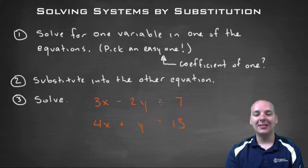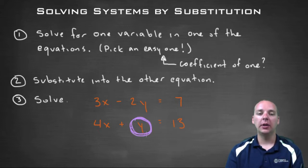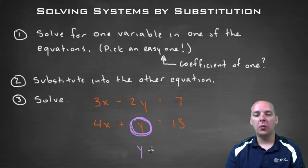Out of the system right here, the guy I would solve for is probably this guy, because this guy has a coefficient of one. So you could solve for y, here you get y = -4x + 13.